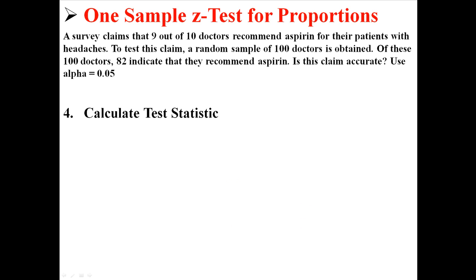Step four is actually calculating the test statistic, calculating the z. We're going to use this equation right here, where p-hat is the proportion that we've calculated from our sample. In this case, it's 82 out of 100, or 0.82. p0 is the population proportion, which is 9 out of 10 doctors, or 0.90. And n is our sample size, 100 doctors.